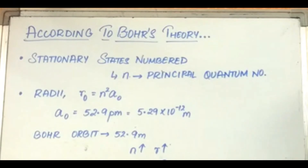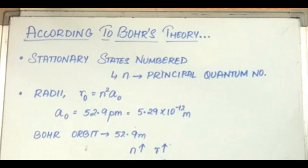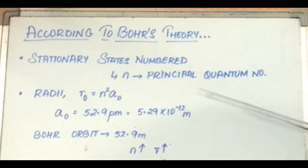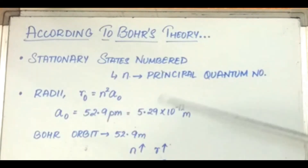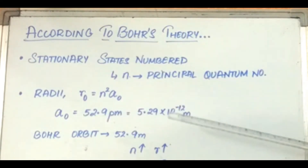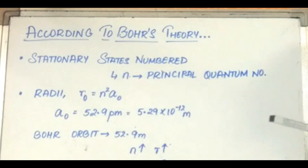According to Bohr's theory, the stationary states of the electron are numbered n equal to 1, 2, 3, up to infinity. These integral numbers are known as the principal quantum numbers. The radii of stationary states are expressed as r_n equal to n² × a₀, where a₀ is equal to 52.9 picometres, which is equal to 5.29 × 10⁻¹² meters.